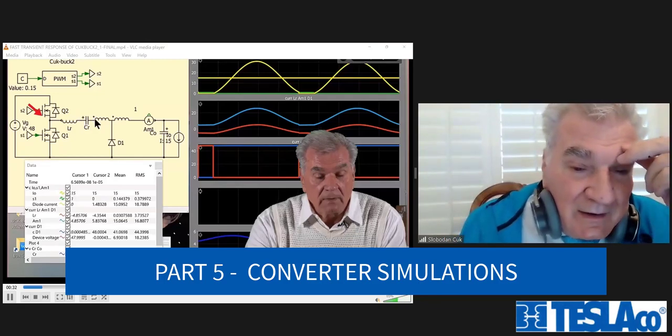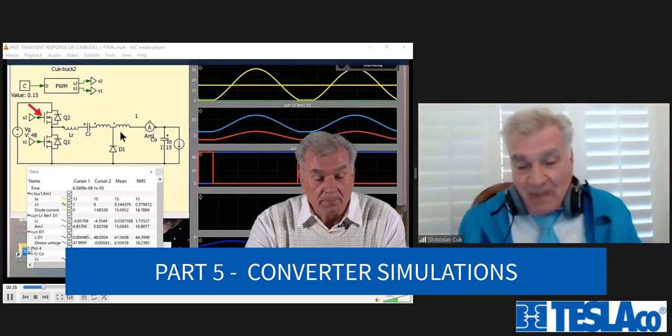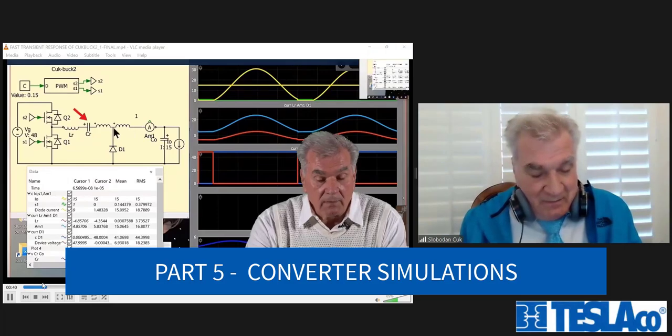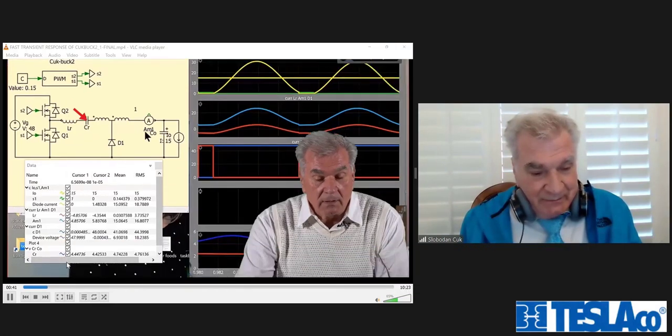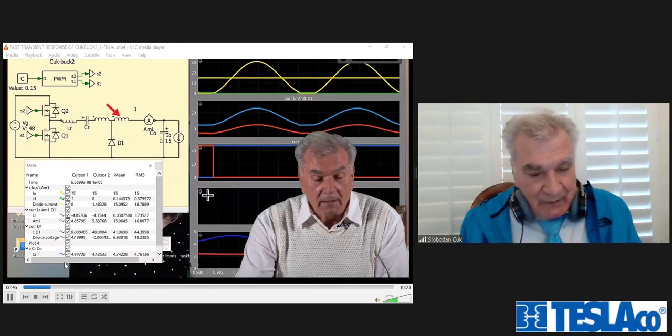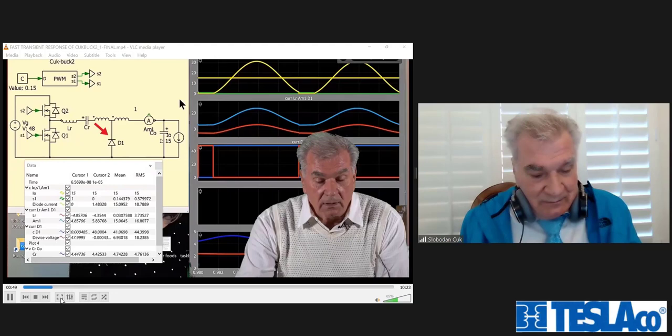On the input side you have a resonant capacitor, and you have a hybrid transformer with its primary and a secondary, and you have a diode, and on the output, secondary delivers current to the load.